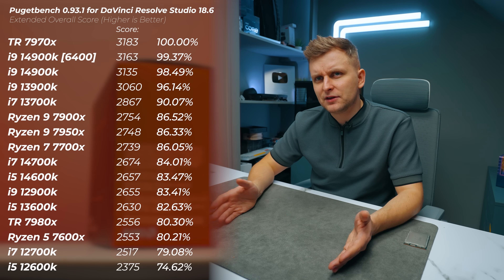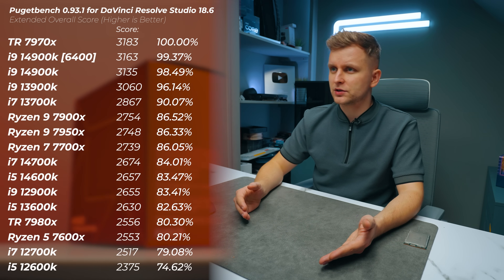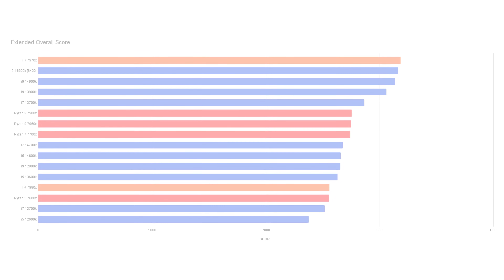From the lowest to the top extended overall score, there's about a 25% spread. The i5-12600K is a very impressive and very affordable CPU. Interestingly, the Ryzen 5 7600X, which is a six-core CPU, is actually slower than the 12600K. If you want a system with good upgradability, the 12600K all the way to the i9-14900K uses the same platform, so you can get up to a 25% increase without changing anything other than the CPU.